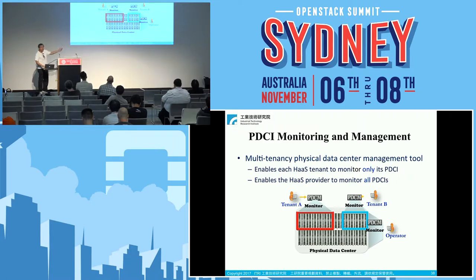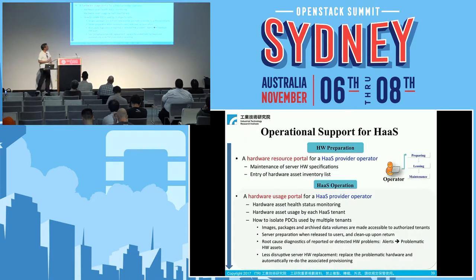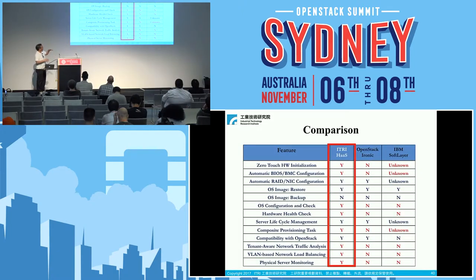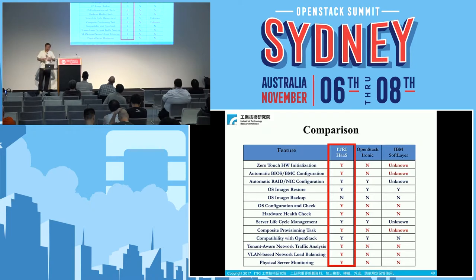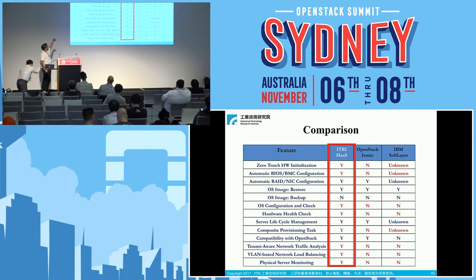In addition to server and network provisioning, we have PDCI monitoring and management, allowing each tenant to monitor its own PDCI and the operator to monitor all PDCIs. We also have operational support tools. Comparing our E3 HaaS solution with OpenStack Ironic and IBM software: many features already exist in Ironic, which we plan to leverage going forward. However, certain features — OS configuration checks, comprehensive provisioning tasks, tenant-aware network traffic analysis, and VLAN load-balancing — are not provided by most existing tools.